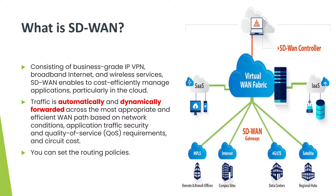quality of service, and it will also consider the circuit cost. In SD-WAN, where there are multiple paths which traffic can take, the path will be automatically chosen based on the network conditions. The most efficient path will be decided by the software mechanism.